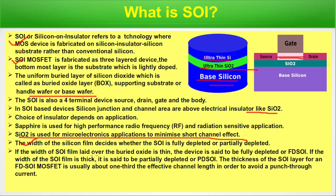If the width of the SOI film laid over the buried oxide is thin, the device is said to be fully depleted or FDSOI. If the width of the SOI film is thick, it is partially depleted or PDSOI. The thickness of an FDSOI MOSFET is usually about one-third the effective channel length in order to avoid punch-through current. The buried oxide layer thickness depends on the application.